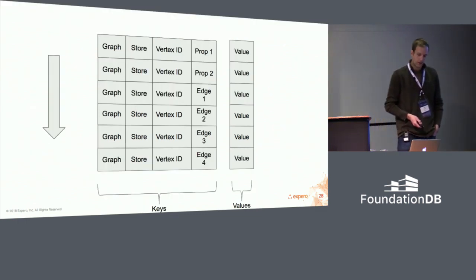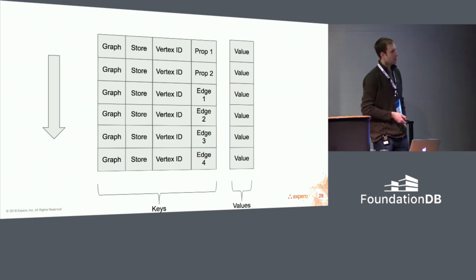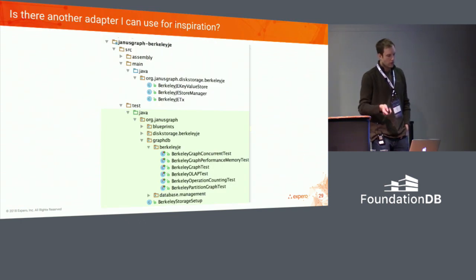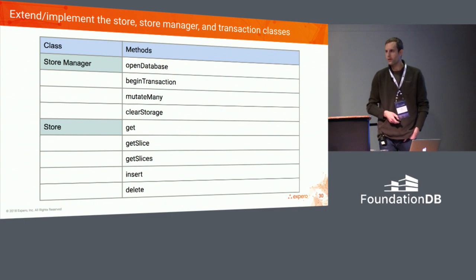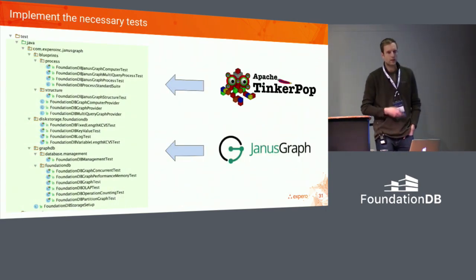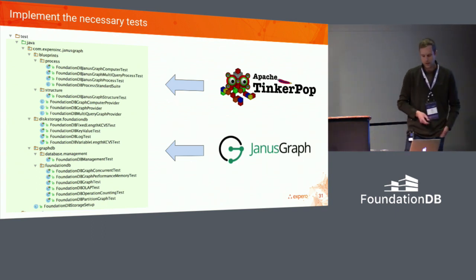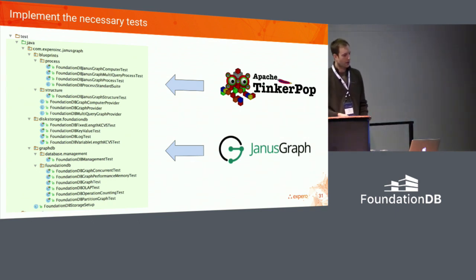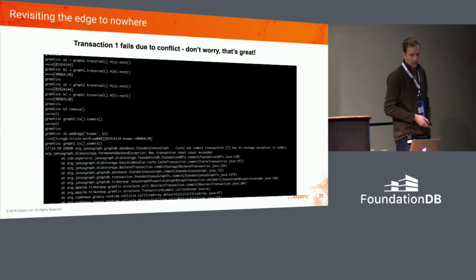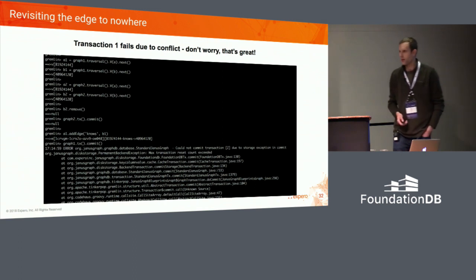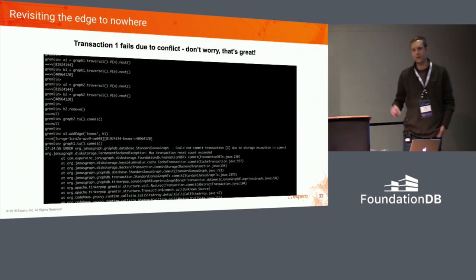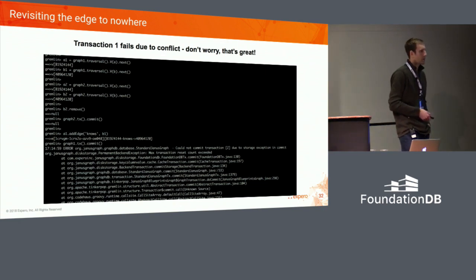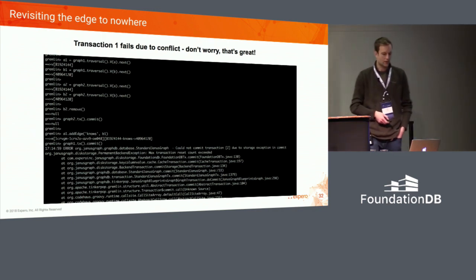Stretching that out a bit, you can see how it's mapped. Prefix compression will really help here. I used the BerkeleyDB adapter as inspiration. There are a host of different methods to implement, and a number of tests to use as inspiration. We took those BerkeleyDB tests and adapted them for the FoundationDB adapter. Going back to the edge-to-nowhere case — this is the one time I'm excited to see an exception. We did that first operation again, now running against FoundationDB. And look — we don't corrupt our graph. We get an exception because there was a conflict when we went to commit, because that vertex was deleted.